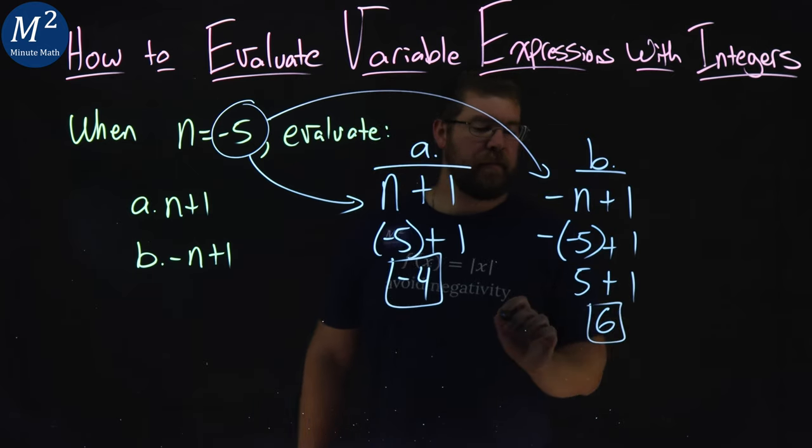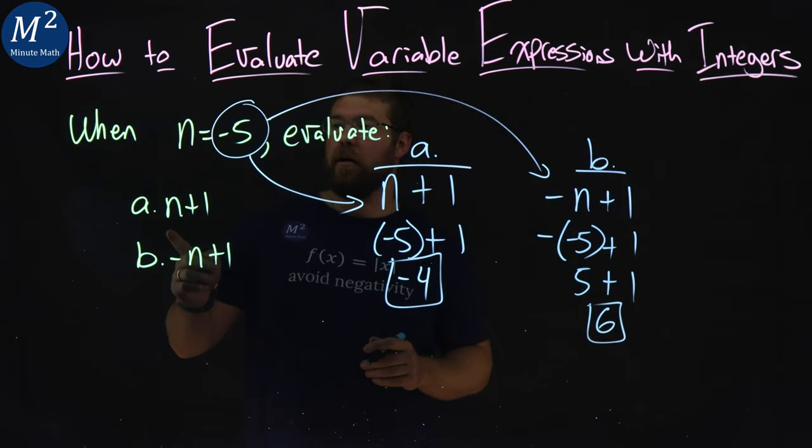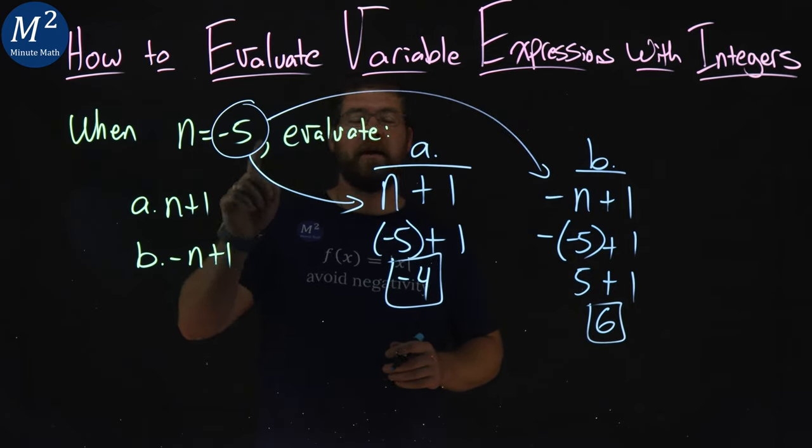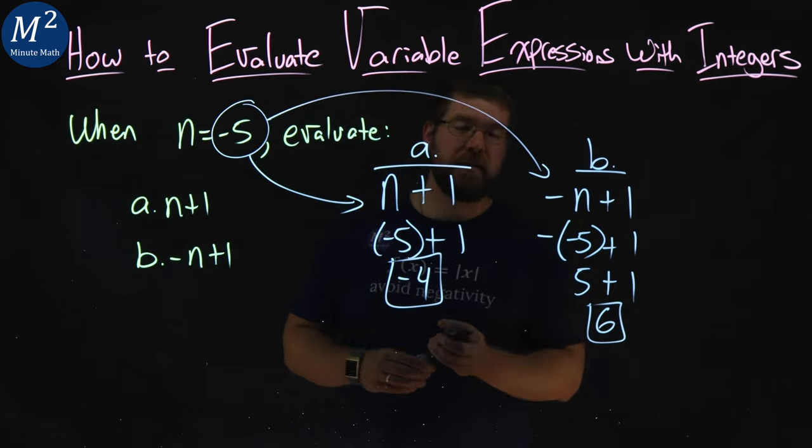And there we have it. We evaluated negative n plus 1 when n equals negative 5, and we got 6.